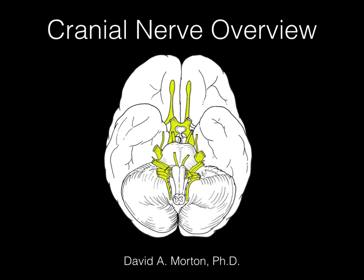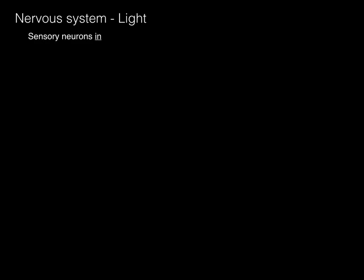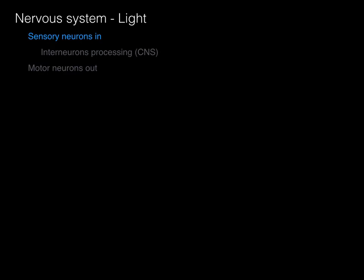Let's begin our discussion of cranial nerves with this cranial nerve overview. As background, the nervous system consists of a pathway for sensory neurons to take information in to the central nervous system, where interneurons process, and then motor neurons take out appropriate information to muscles and glands.